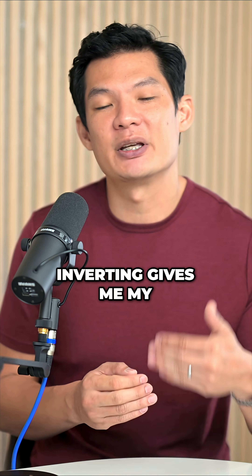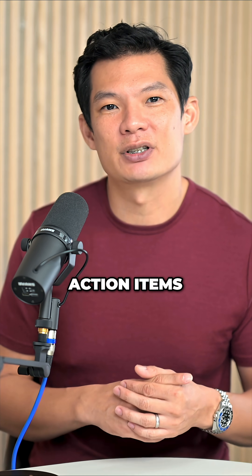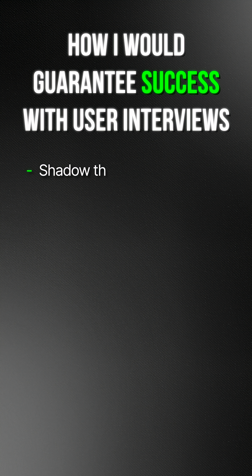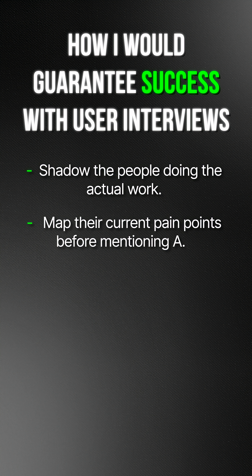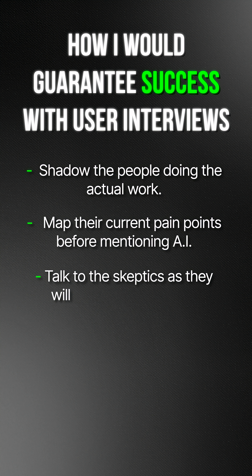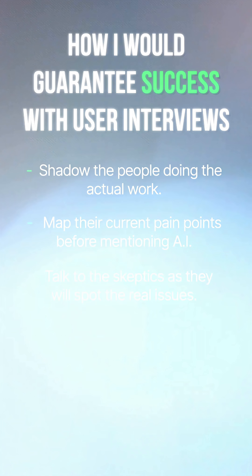Inverting gives me my action items. I should shadow the people doing the actual work. I should map their current pain points before mentioning AI. And I should especially talk to the skeptics — they'll spot real issues.